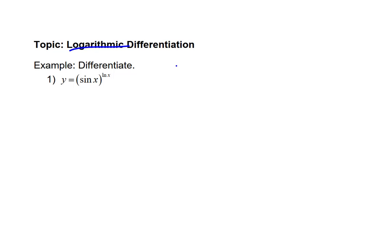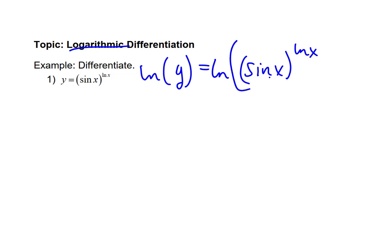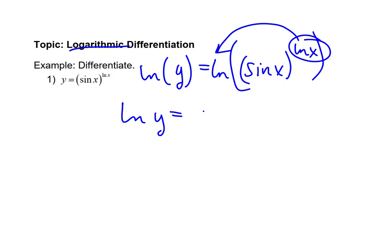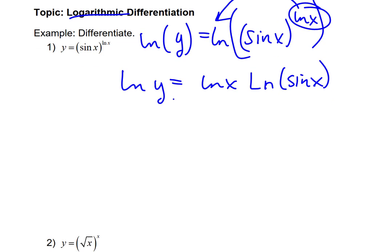We're going to use logarithmic differentiation, where we take the natural log of both sides of the function: y equals sine of x to the natural log of x. The reason is that introducing the natural log lets us use log properties to bring the exponent down in front, giving us natural log of y on the left side equals natural log of x times natural log of sine of x. That's just a log rule — no derivatives yet. But now it's written in implicit form.